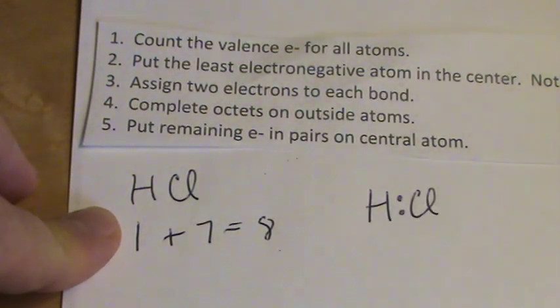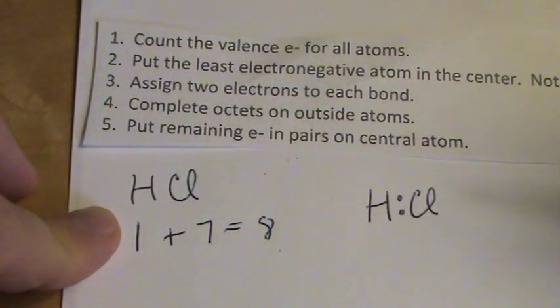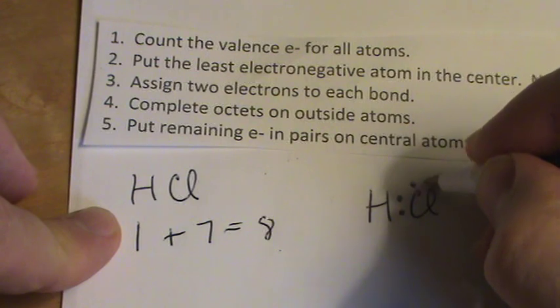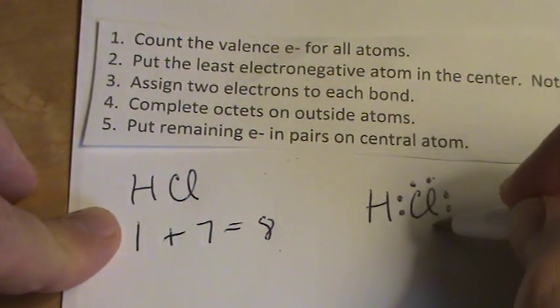I've used two, I have six more electrons, and now I can put the remaining electrons around to fill the octet. Hydrogen has two, so I'm done with that, but Chlorine needs 8, so 2, 4, 6, 8. I've used up all my electrons.